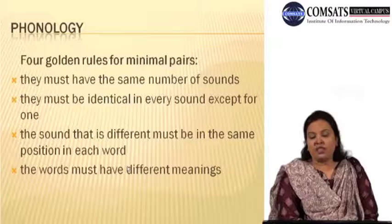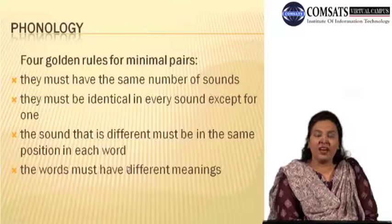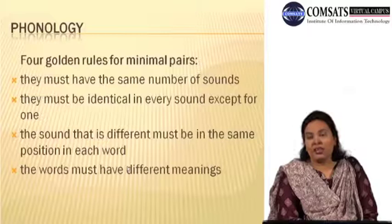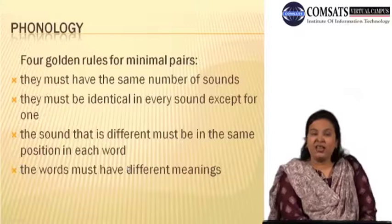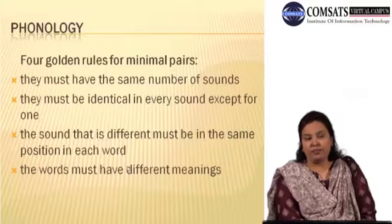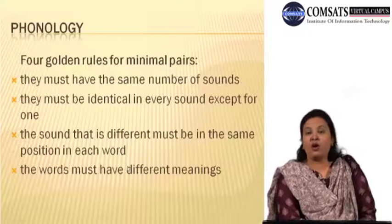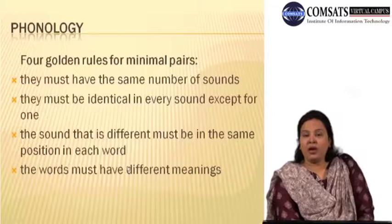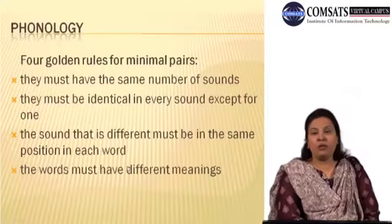For example, between 'fan' and 'van,' the one phonological element that is different is 'fa' and 'va,' and it exists at the initial position in both words, so it can be a minimal pair. But 'fan' and 'fap' cannot be minimal pairs because in one I am changing one place and in another a different place — the element that is changed should be at the same position. The fourth rule: the words must have different meanings. When you change that one phonological element, the whole meaning should change. These are the conditions for having minimal pairs.